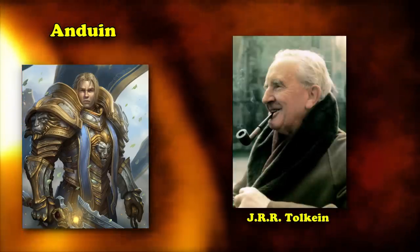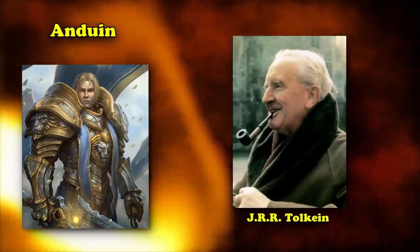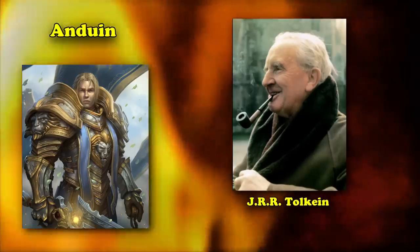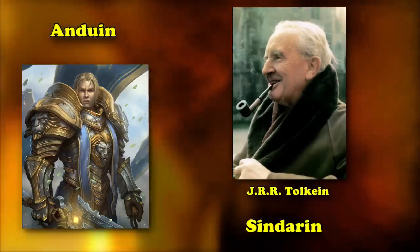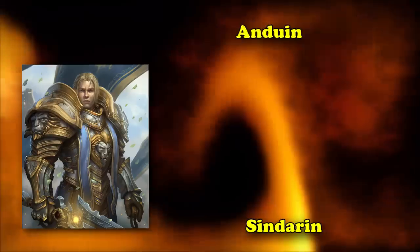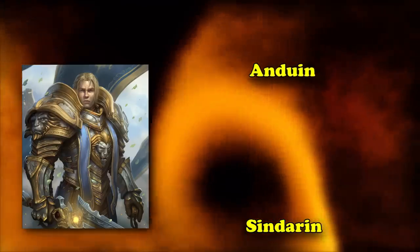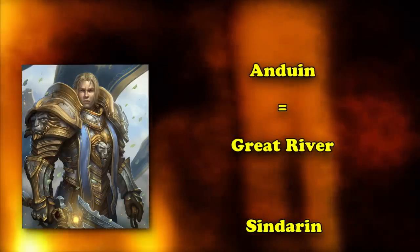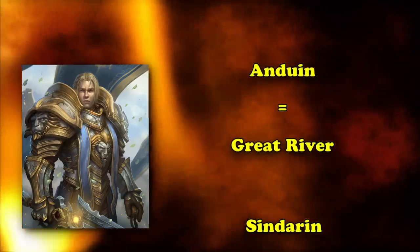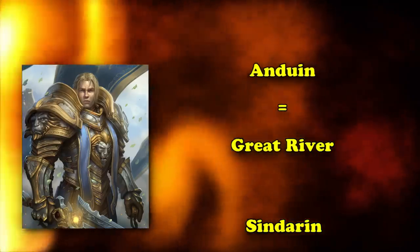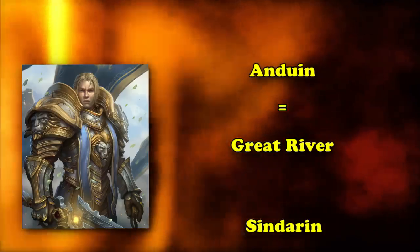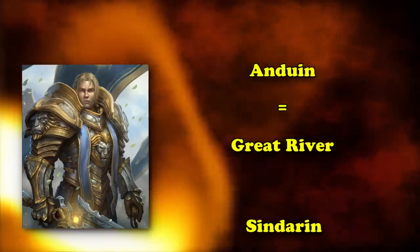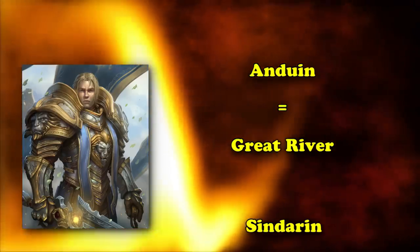Tolkien invented numerous languages for his epic fantasy world. One of them is Sindarin, which was one of the languages of the elves. Anduin is Sindarin for Great River, but it literally translates as Long River. Naming a character in WoW after River is a bit odd, so let's delve a little deeper into how this influences Anduin the character.